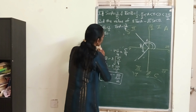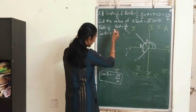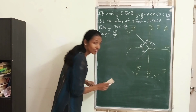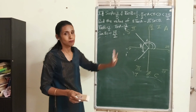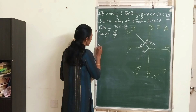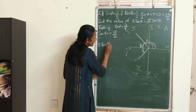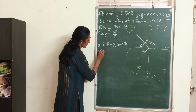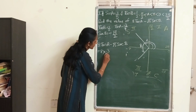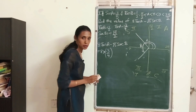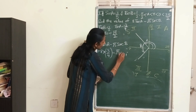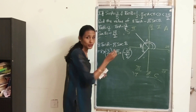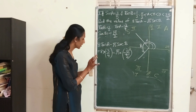Since B is in the third quadrant, only tan and cot are positive, so sec B will be negative: sec B = −√5/2. Now that we have tan A = −3/4 and sec B = −√5/2, we just substitute into 8 tan A − √5 · sec B: that gives 8 × (−3/4) − √5 × (−√5/2).